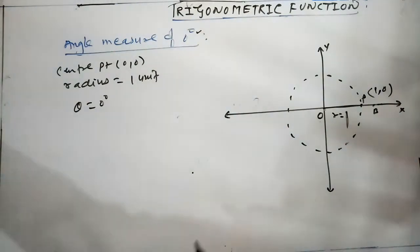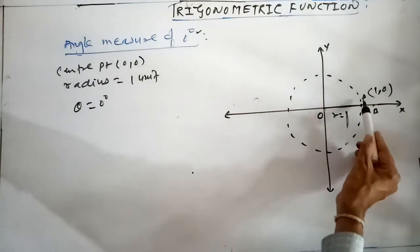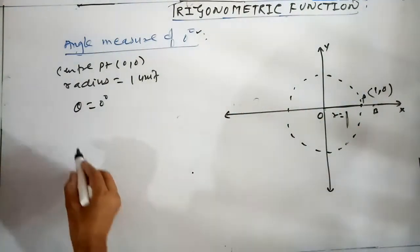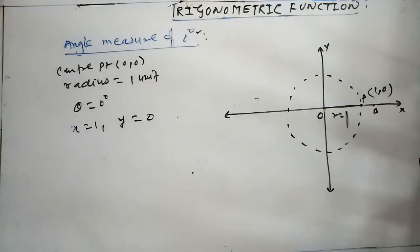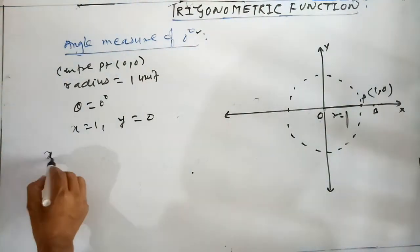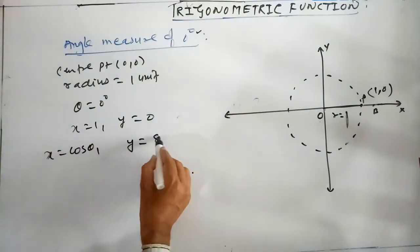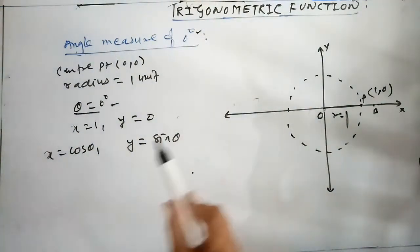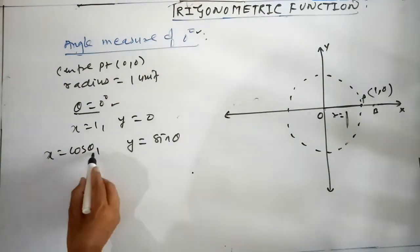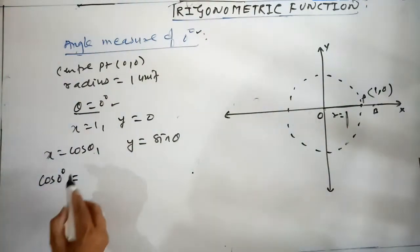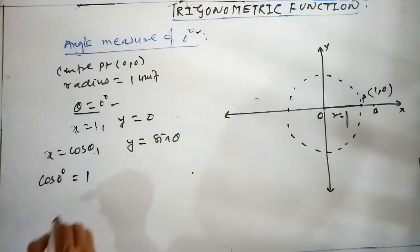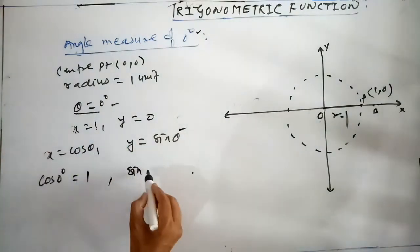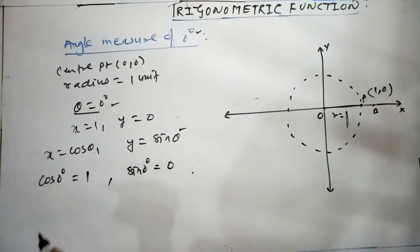Terminal ray intersects the standard unit circle at point P whose coordinates are (1, 0), so x = 1 and y = 0. In the standard unit circle, x = cos θ and y = sin θ. Here theta = 0 degree, so cos 0° = 1 and sin 0° = 0.